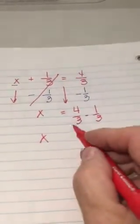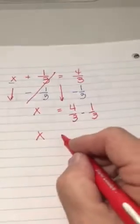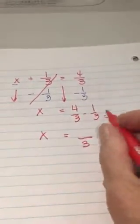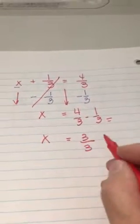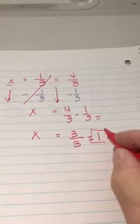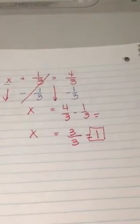Our denominators match, which is needed in adding and subtracting. So, we keep our same denominator, and four minus one is three. Three over three equals one. Any number over itself equals one. x equals one.